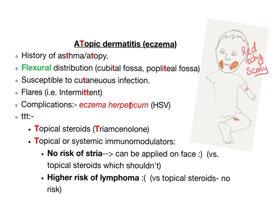Hi, this is Medicosis Perfectionalis and let's talk about atopic dermatitis, also known as eczema. This is the T mnemonic. With atopic dermatitis, there is a history of asthma or atopy — we have T's here.